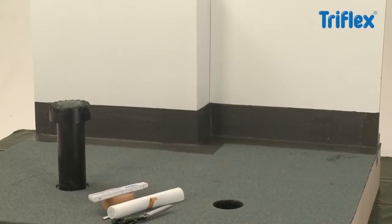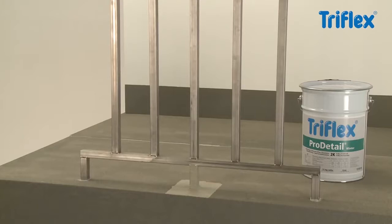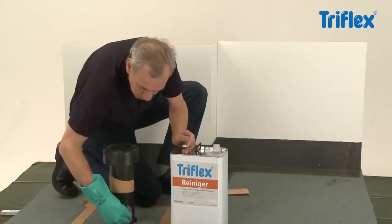Triflex Pro Detail is used to waterproof flashings, upstand details and other details commonly found on flat roofs and balconies.